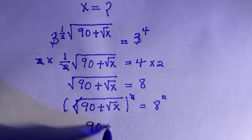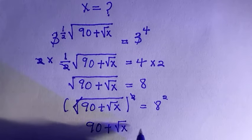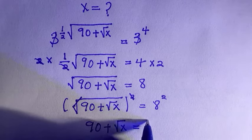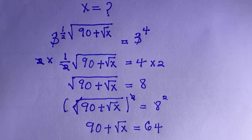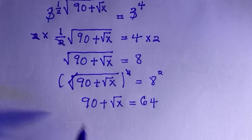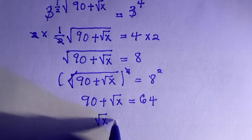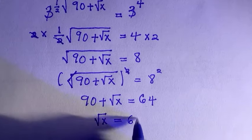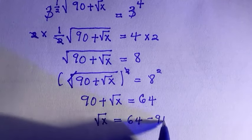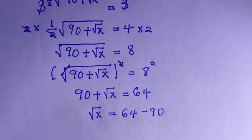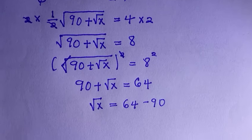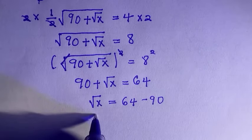Then we have 90 plus root x equals to 64. That is 8 raised to the power of 2. So we are looking for x. We have 90 here and with x there, so we take 90 to the other side. Then we have 64 minus 90.